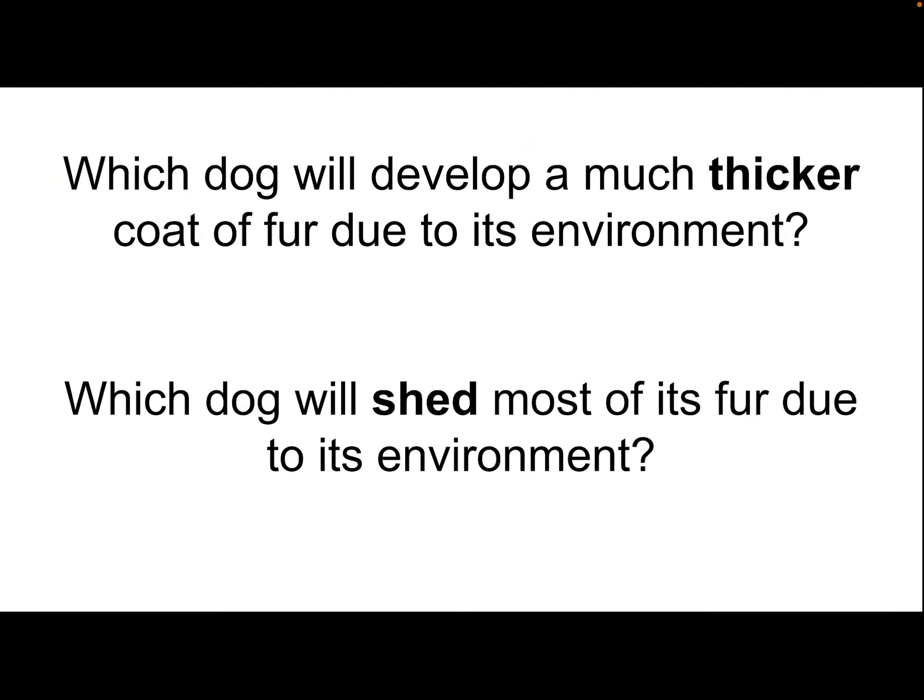They're from the same breed and the same litter. They have the same parents, so they have a lot of the same inherited traits. They're not exactly the same, but they're similar. We want to know which dog will develop a much thicker coat of fur due to its environment, and which dog will shed most of its fur due to its environment. Do you think Ace in Alaska will have a thicker coat, or Cookie in California?